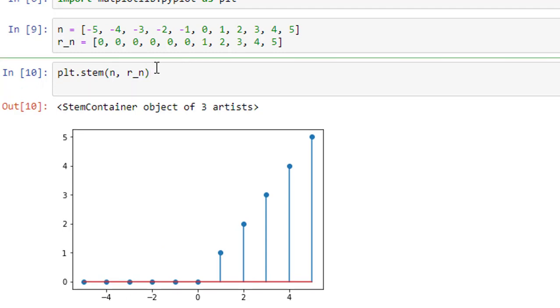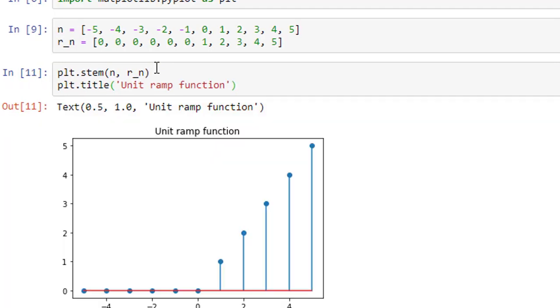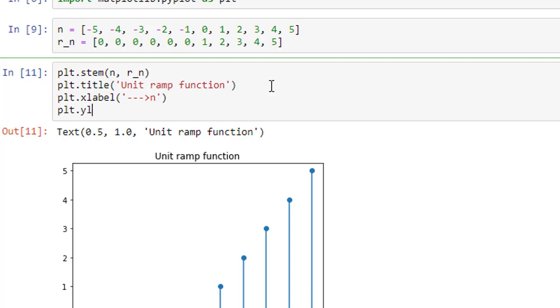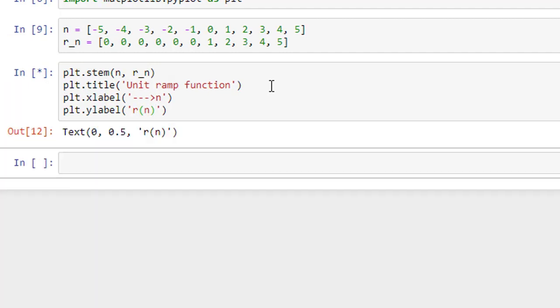Now we shall name the signal plt.title. It is a unit ramp function. And we shall as well give title for x-axis and y-axis. x-axis is n and y-axis is plt.ylabel r of n. So I go ahead and run it.